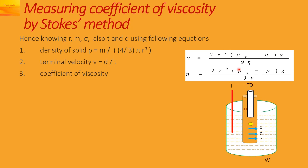Rearranging this formula we get eta in the numerator and v in the denominator. V we are substituting as d/t, and the densities we are denoting as rho for the density of the solid and sigma for the density of the liquid. So this way you can find the coefficient of viscosity.